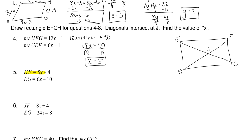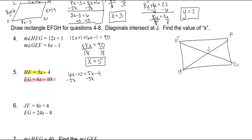For the next one, diagonals HF and EG of a rectangle are congruent, so we set them equal: 6X minus 10 is equal to 5X minus 4. Subtract 5X on both sides: X minus 10 is equal to negative 4. Add 10 on both sides, and X is 6.